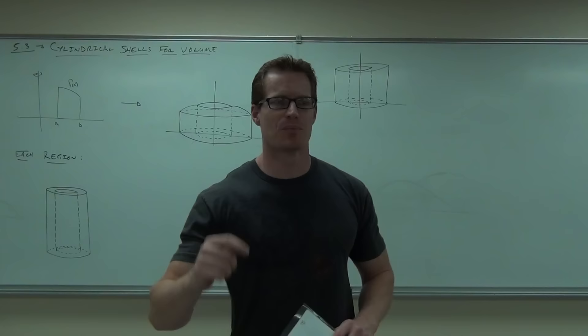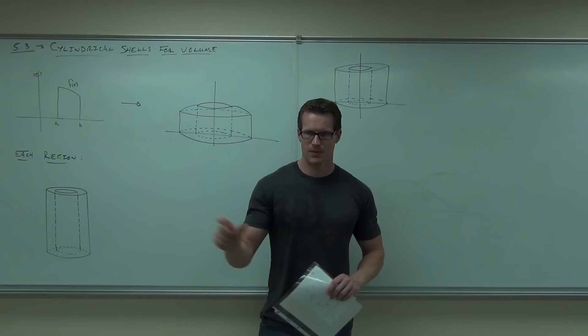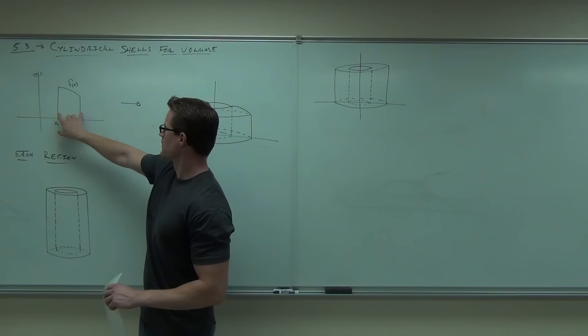The theory of how to do cylindrical shells — I briefly went over this last time. Here's our idea: can we take this region that's bound by two vertical lines at a and b and f(x), revolve it around the y-axis, and get the volume of that solid created?